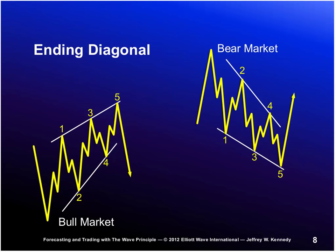The ending diagonal is a very important pattern — from an Edwards and McGee perspective, it could be referred to as a rising wedge. It's referred to as a terminating wave pattern. We only find the ending diagonal in two wave positions: the fifth wave position of an impulse wave, or the wave C position of an ABC formation. Whenever we see this specific pattern, it signals the termination of the trend of the next larger degree. So we're always on the lookout for a good quality ending diagonal.